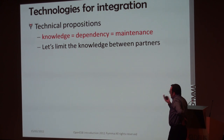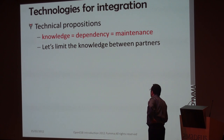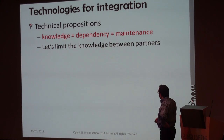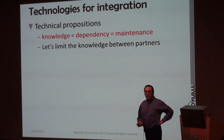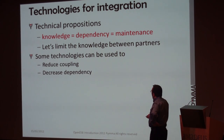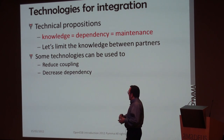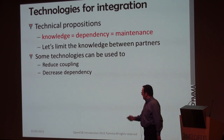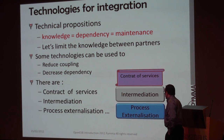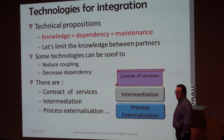So we have a proposition: knowledge equals dependency, equals maintenance. If we want less maintenance, maybe we can limit the knowledge between partners. To do that, we try to find technologies to reduce coupling between partners and decrease dependency. We will use three different technologies: contract services, intermediation, and process externalization.